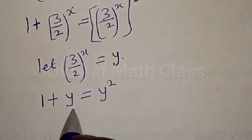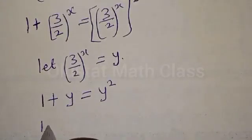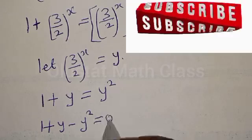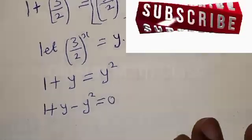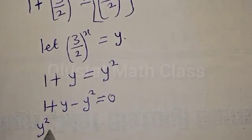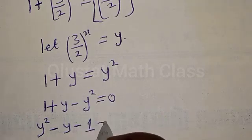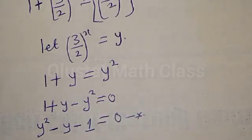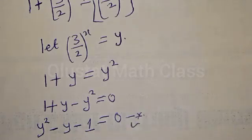Let's equate it to zero. We have 1 plus y minus y squared equal to 0, which can be rewritten as y squared minus y minus 1 equal to 0. Let's call this equation star. This is a quadratic equation, so let's solve using the quadratic formula.